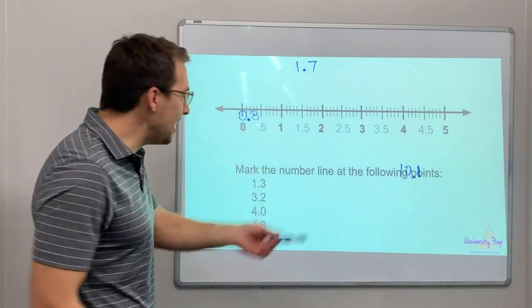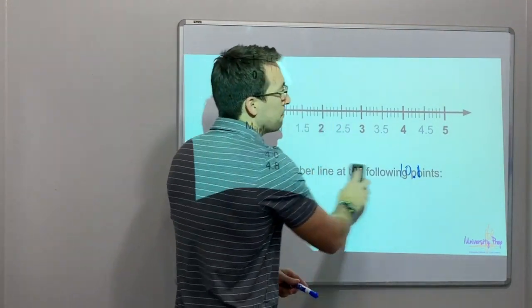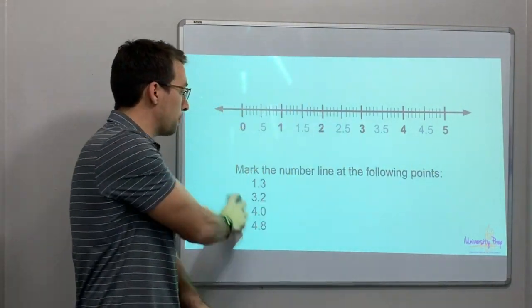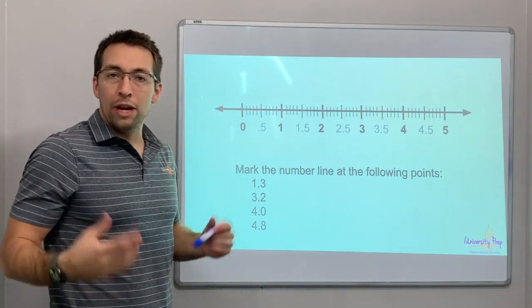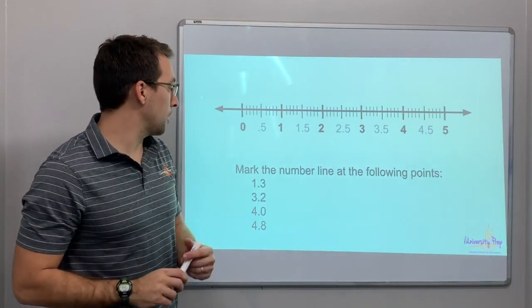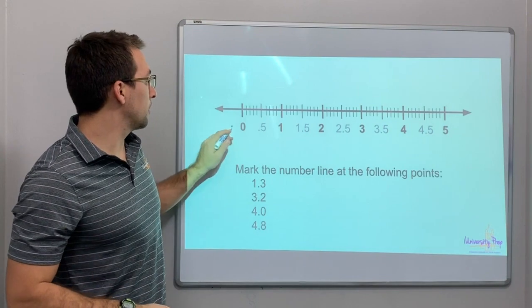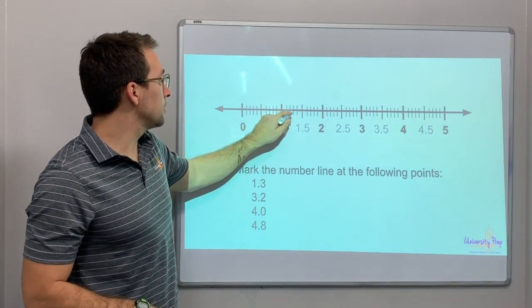And then the inverse, we have given points. We have four points. We need to mark the number line. Mark the number line at the following points. 1.3. So we get to 1, 1, 2, 3.